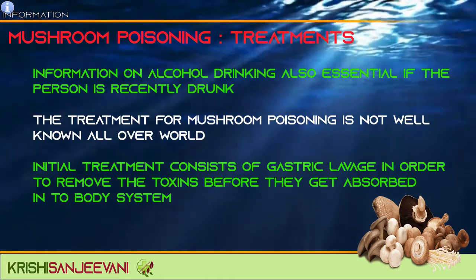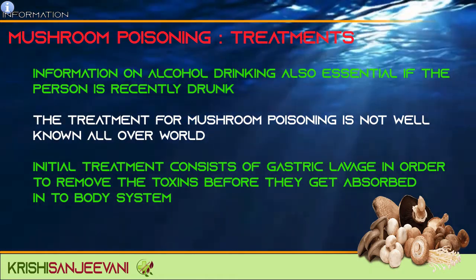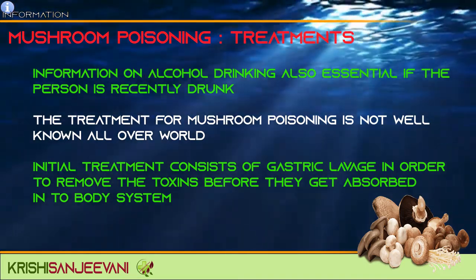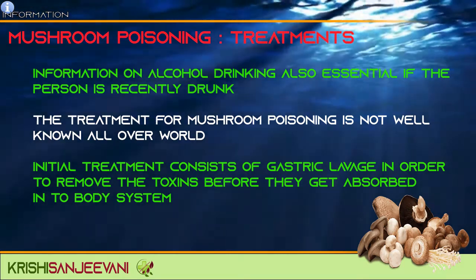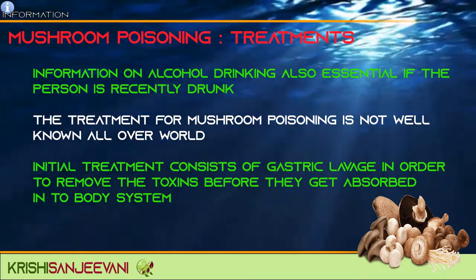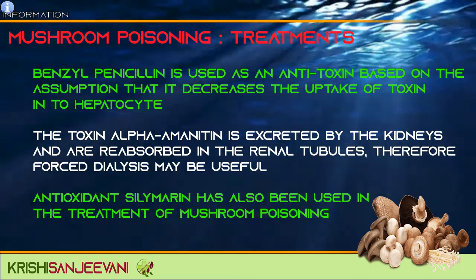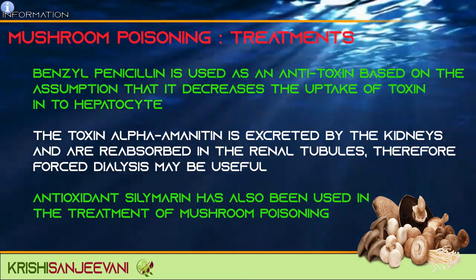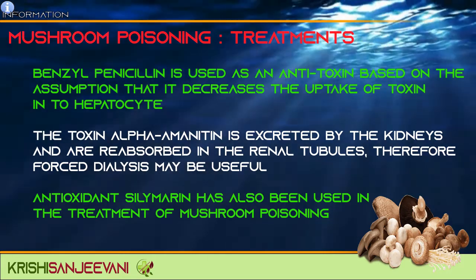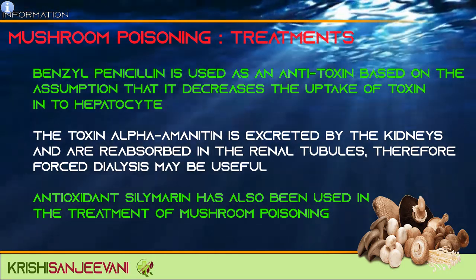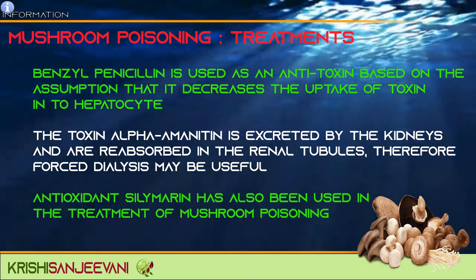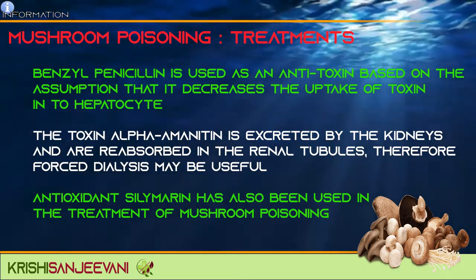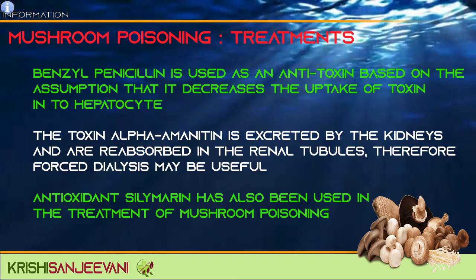Information on alcohol drinking is also essential if the person has recently drunk. The treatment of mushroom poisoning is not well known all over the world. Initial treatment consists of gastric lavage in order to remove the toxins before they get absorbed into the body system. Benzile penicillin is used as an antitoxin based on the assumption that it decreases the uptake of toxin into hepatocytes. The toxin alpha-amanitin is excreted by kidneys and reabsorbed in the renal tubules; therefore, forced diuresis may be useful. The antioxidant silymarin has also been used in the treatment of mushroom poisoning.